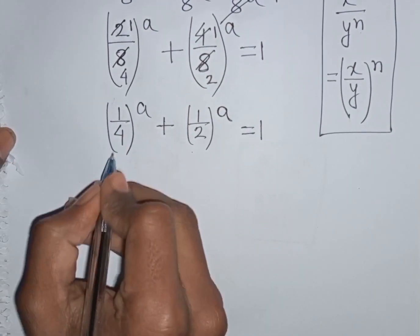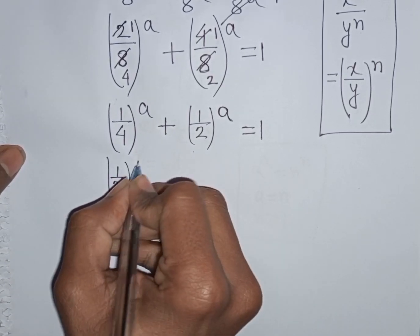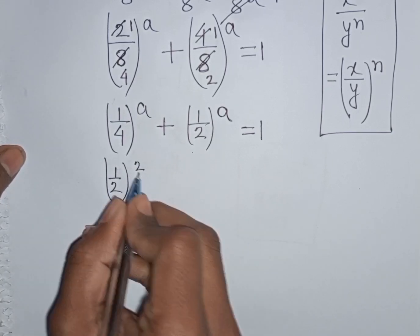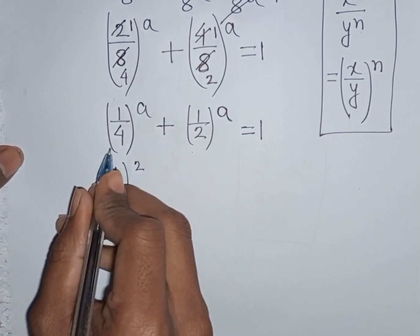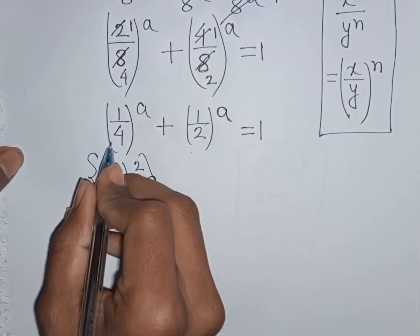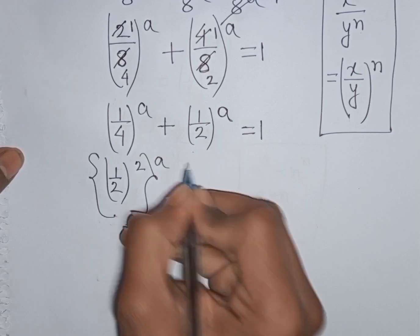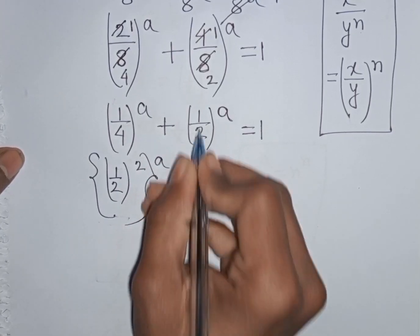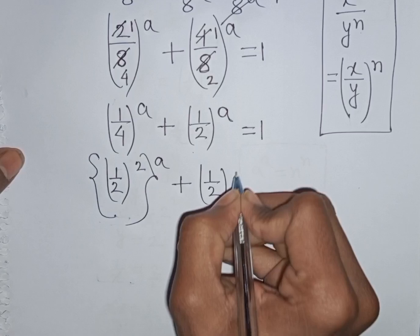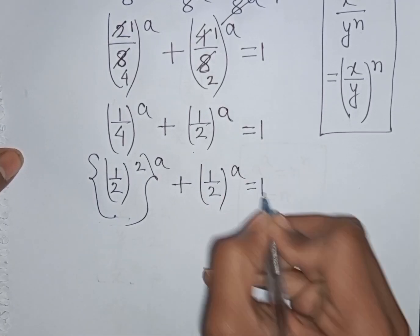Now 1/4 can be written as (1/2)^2, since 1 squared is 1 and 2 squared is 4. So the first bracket (1/4)^a can be rewritten as (1/2)^2, then raised to the power of a, plus (1/2)^a is equal to 1.